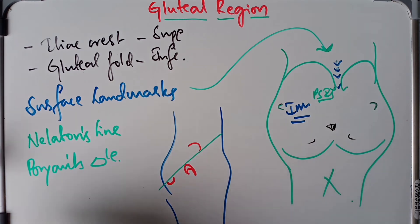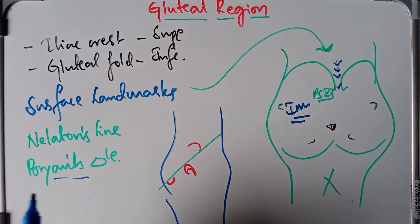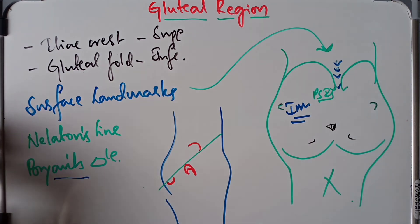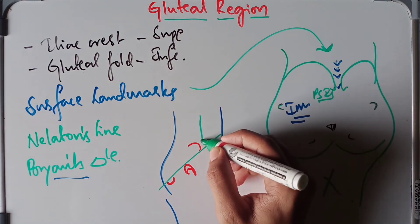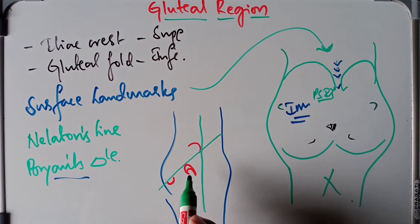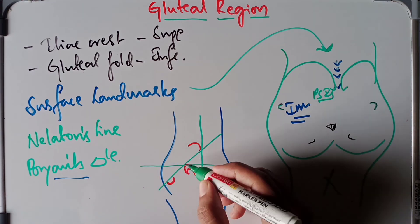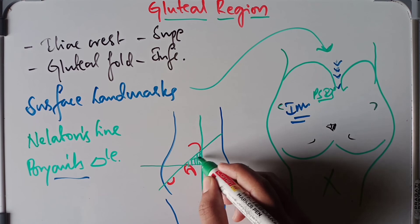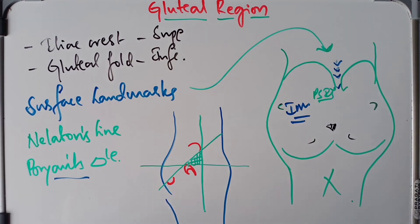Bryan's triangle is formed when we draw a vertical line through the anterior superior iliac spine of the hip joint and then draw a horizontal line through the tip of the greater trochanter — together these lines form a triangle known as Bryan's triangle.